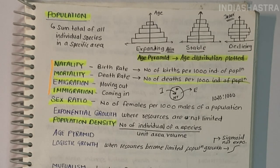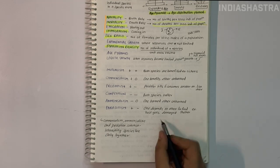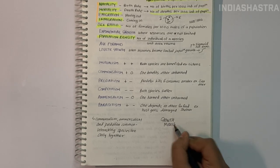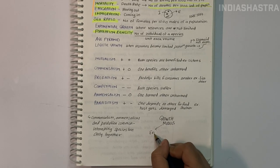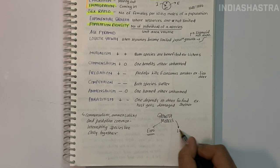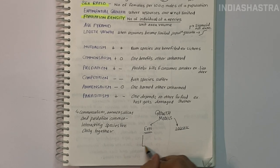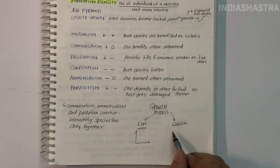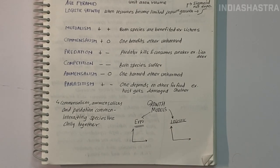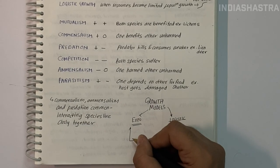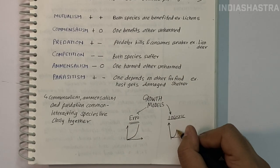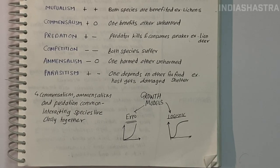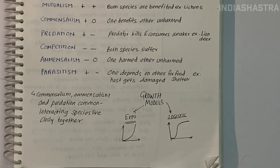There are two types of growth models. The exponential growth model applies when resources are unlimited — the population grows exponentially. But this is unrealistic, as there is always resource scarcity. In logistic growth, a population growing in a habitat with limited resources shows initially a lag phase, followed by acceleration, then deceleration, and finally an asymptote when population density reaches the carrying capacity. The shape of logistic growth is sigmoid.